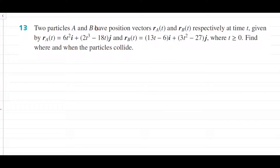Question 13: two particles A and B have position vectors ra and rb respectively at time t. You have vector functions ra and rb in terms of t, with i and j components. And t obviously has to be bigger than 0, so make sure you note that domain down — your answer cannot be negative.